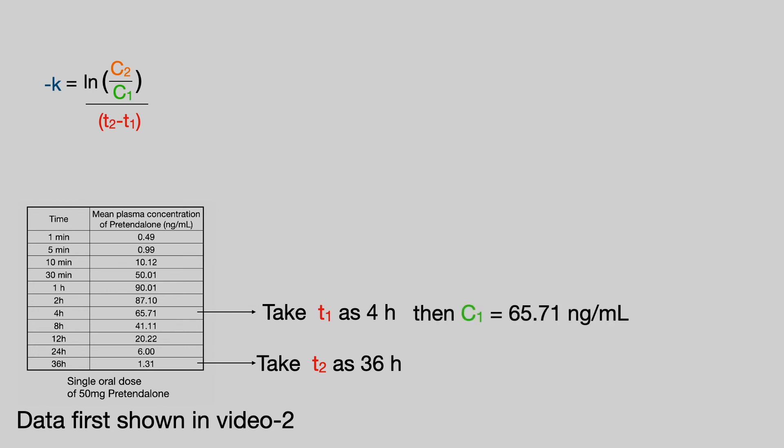So therefore C1 is 65.71 nanograms per mil and C2 is 1.31 nanograms per mil.